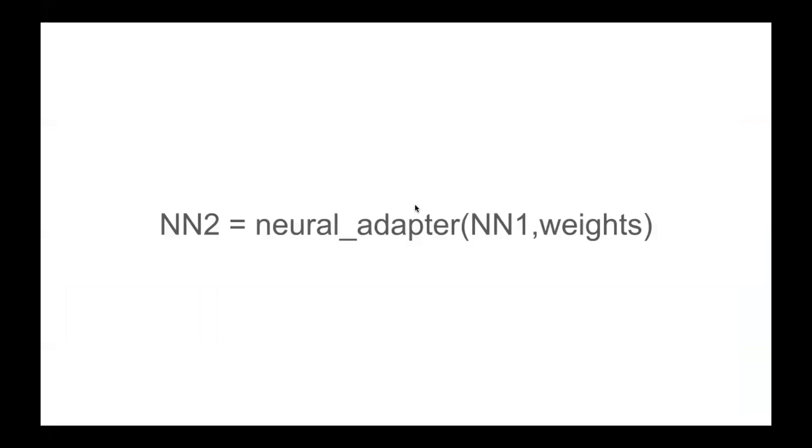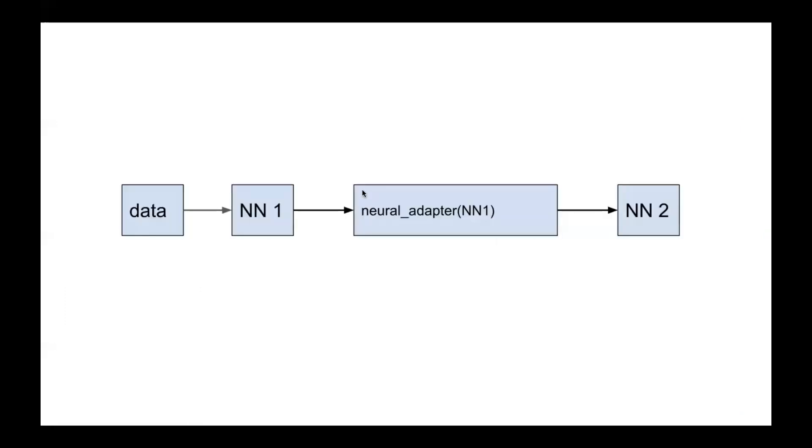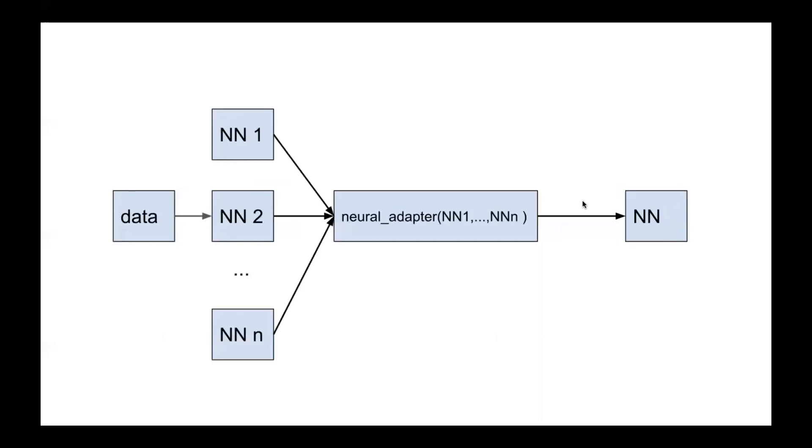The second method is neural adapter that allows to retrain the neural network from the first problem and create a new neural network to use in the next problem. Or we can retrain a bunch of neural networks to some new one.